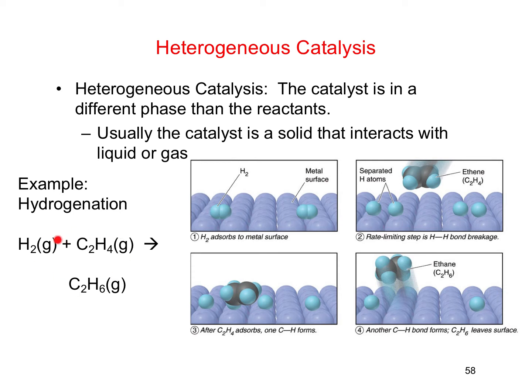In the hydrogenation of ethene, the hydrogen molecules get absorbed onto the metal surface. When they're on the metal surface, a reaction happens where we actually separate or break the H₂ bond. Then the ethene can come in and react with the now-separated hydrogen atoms. The catalyst has the advantage of helping to break the hydrogen-hydrogen bonds, and it also keeps them fixed — rather than these H₂ molecules running around, they're sitting still, waiting for the ethene to come in and react with them.